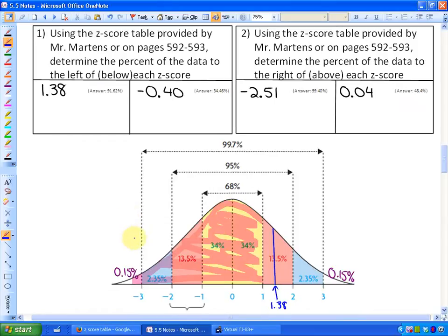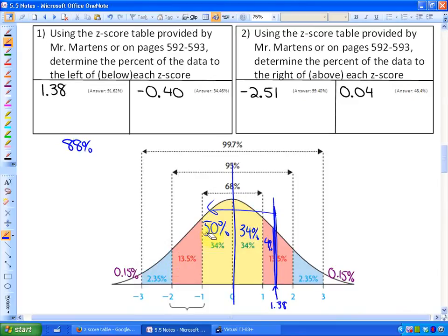So 50% plus 34 plus, I could just estimate what this is, maybe 4%. So the amount below my Z-score, so this direction, would be 50 plus 34 plus 4. I'm going to guess roughly 88%. It gives me a ballpark figure of what I'm expecting to get here.